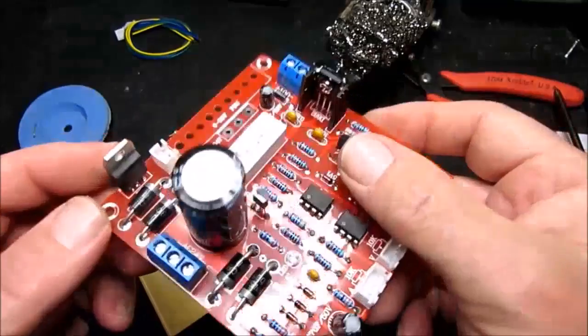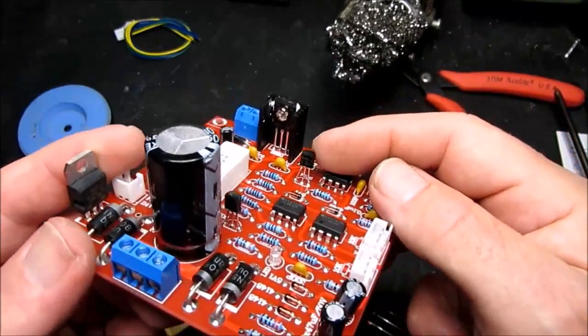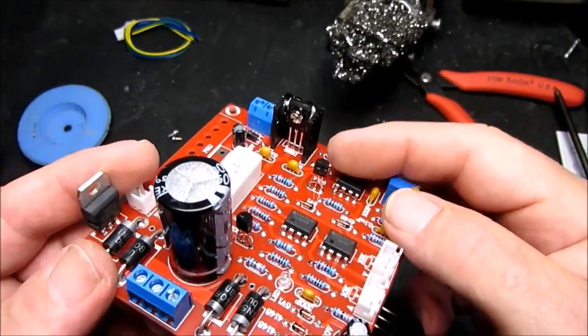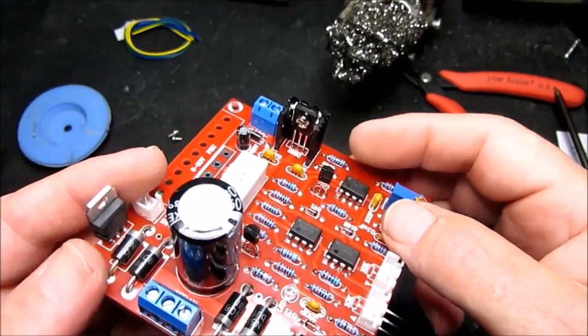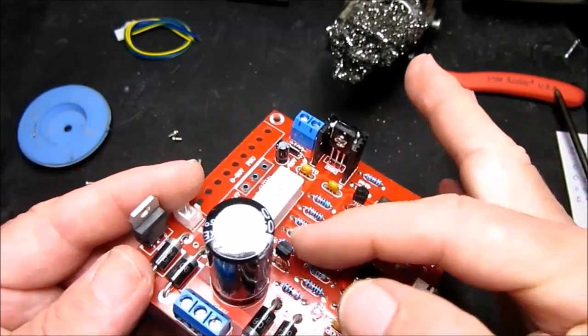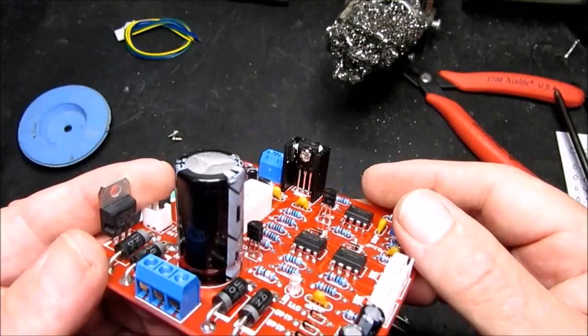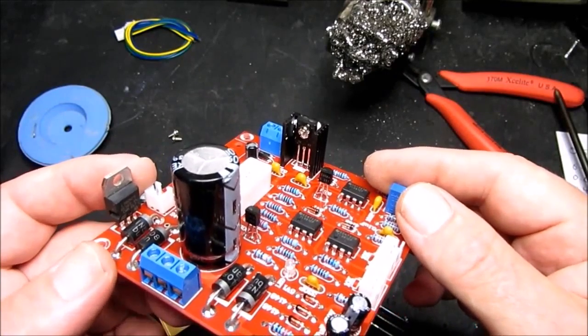The smaller transistors, you do need to be a little bit careful, they're not the same. This one here is a 9014 and this one is a 9015, so make sure that you've identified those correctly.